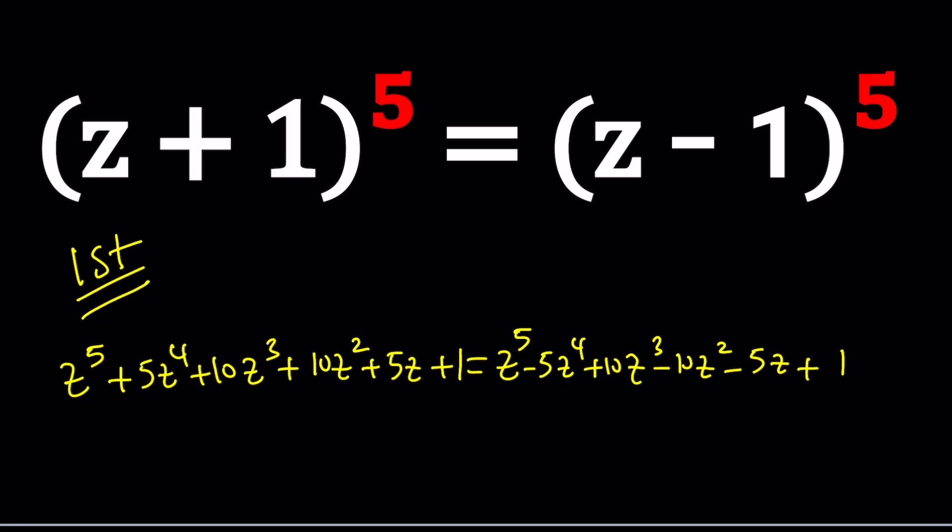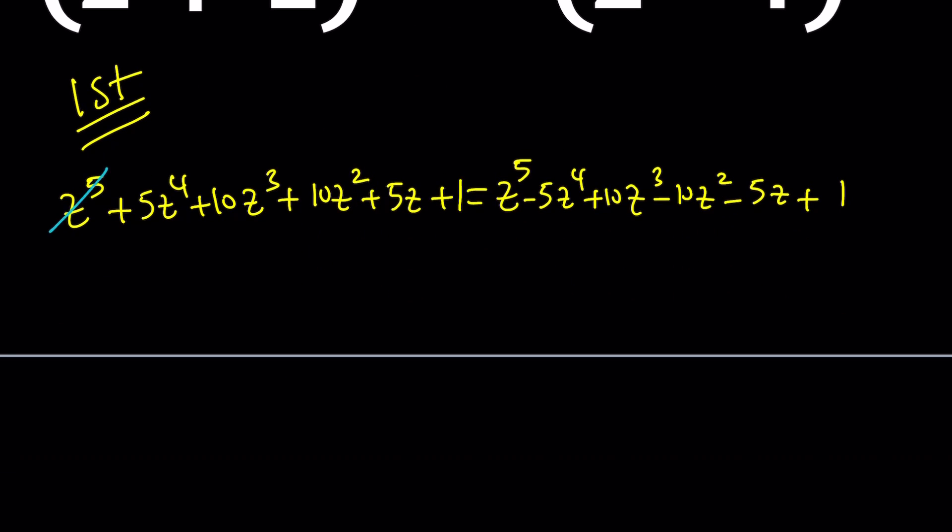And then from here a lot of terms are going to cancel out. For example, Z to the fifth is going to cancel out. And then Z cubed is going to cancel out. So that's not going to be cubic. It's actually going to be a quartic equation. And then, I messed up here because it's supposed to be a plus and this is supposed to be a minus sign.